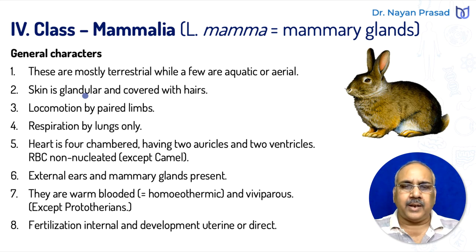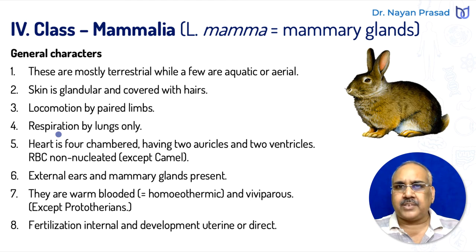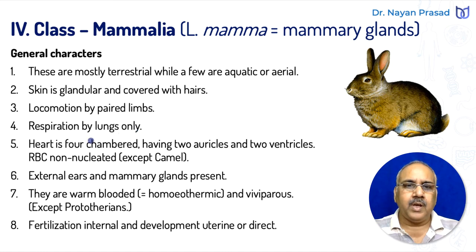In them, skin is glandular, having different glands — sweat glands, oil glands — and the skin is covered with hairs. Locomotion takes place by paired limbs. Respiration, meaning gaseous exchange, takes place by lungs only. All mammals are lung breathers, even whale and dolphin are also lung breathers. Heart is four-chambered, having two auricles and two ventricles.